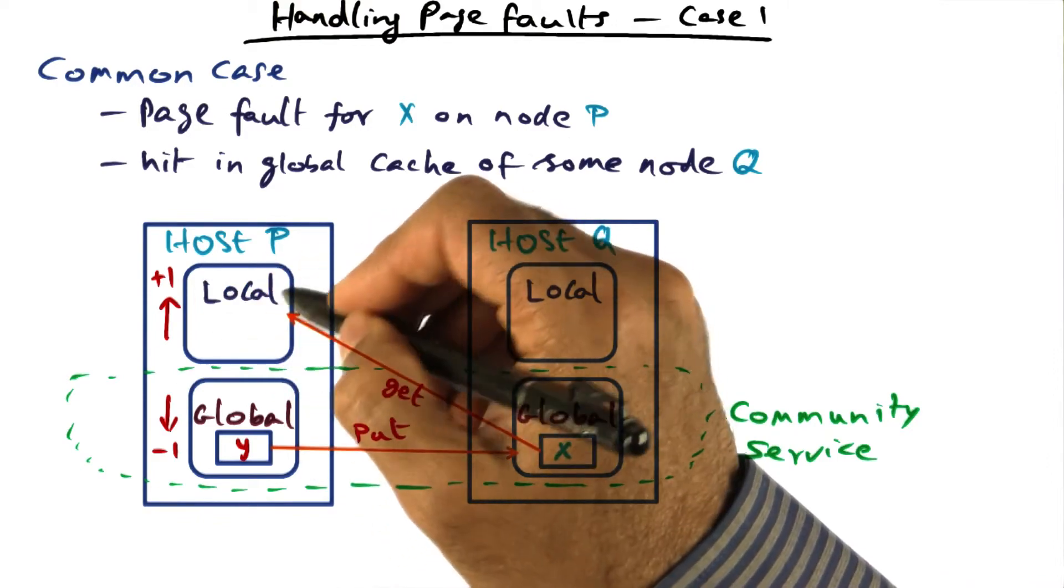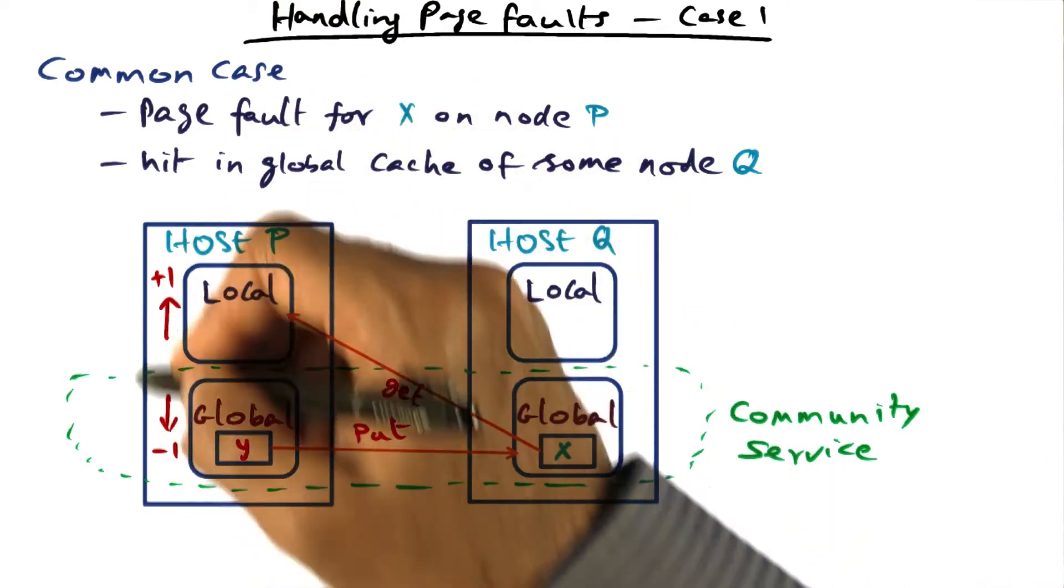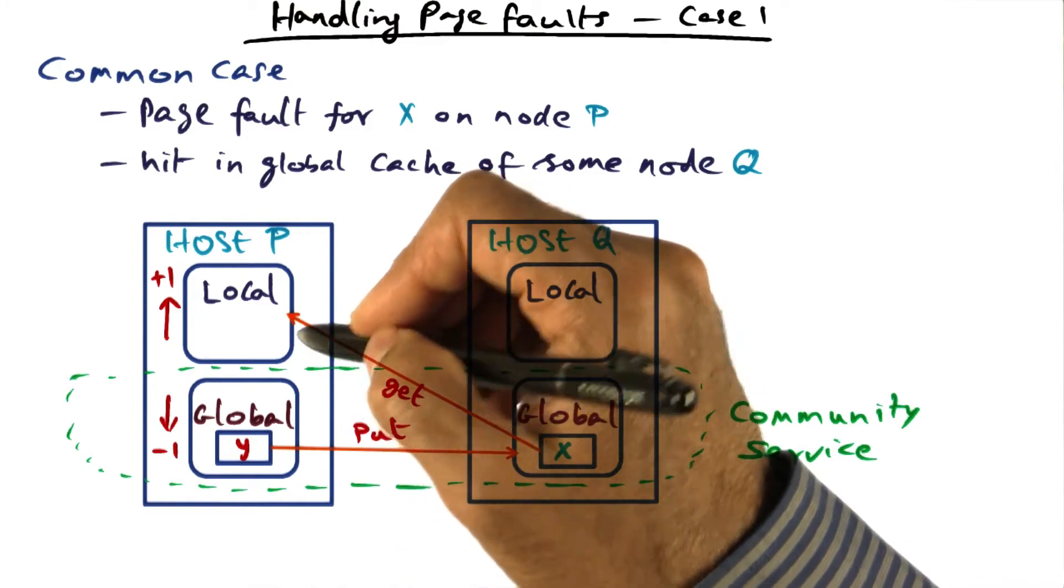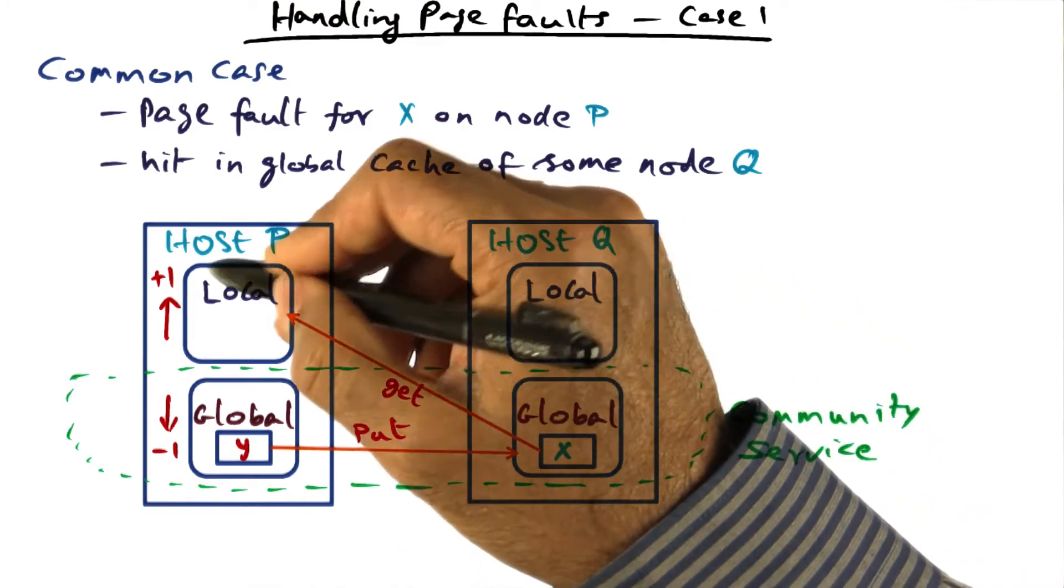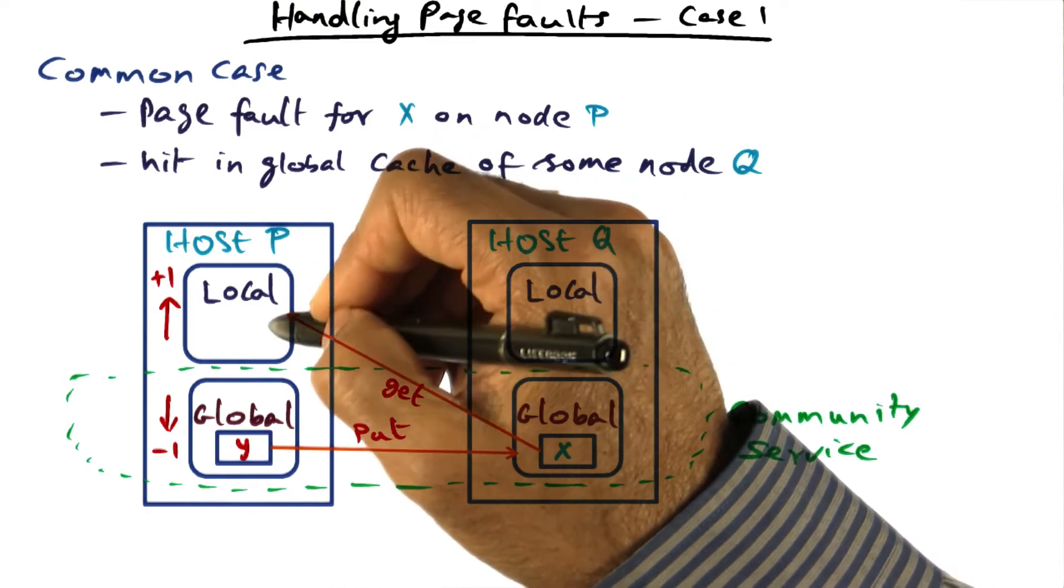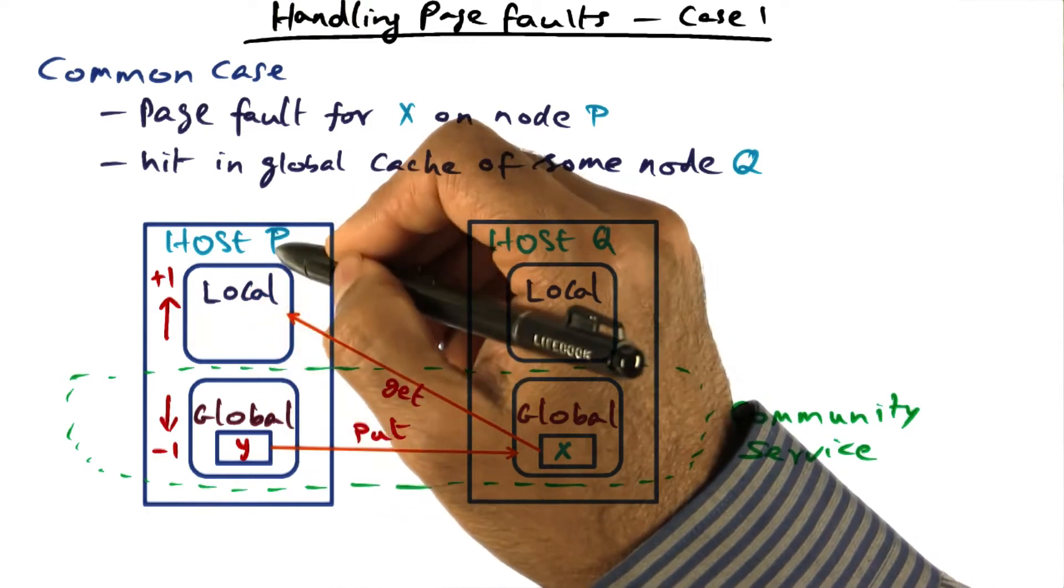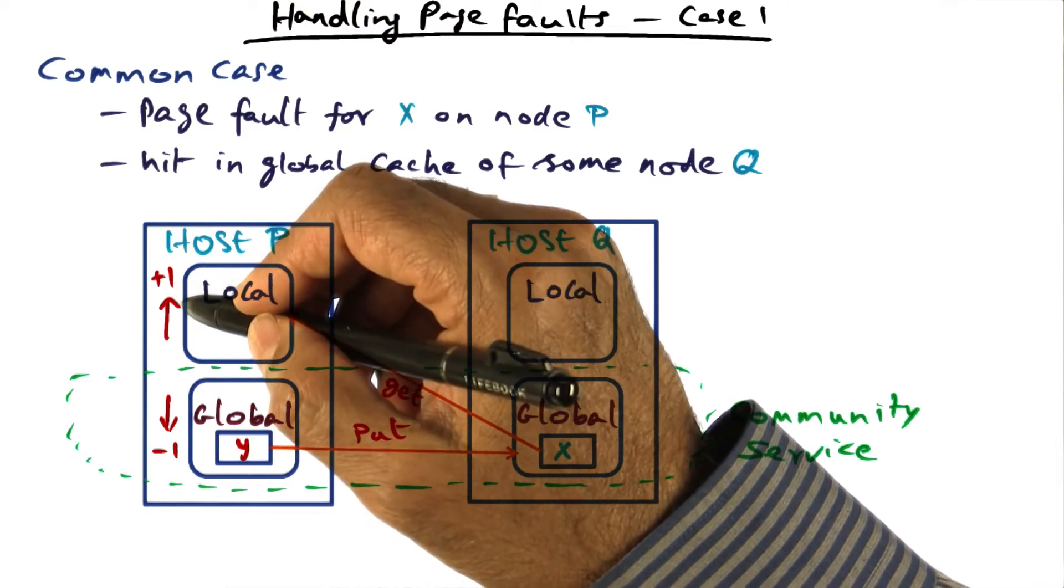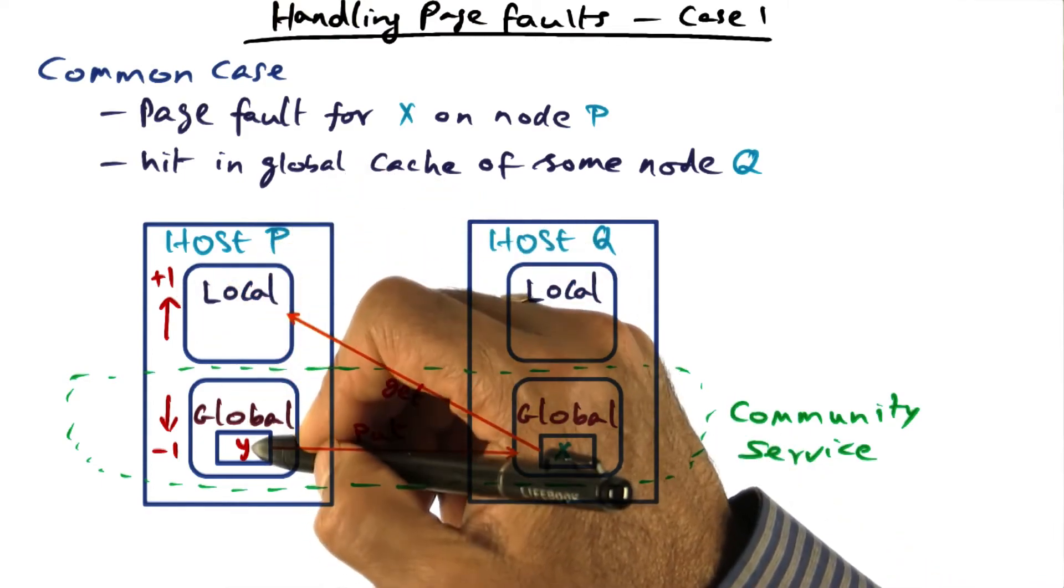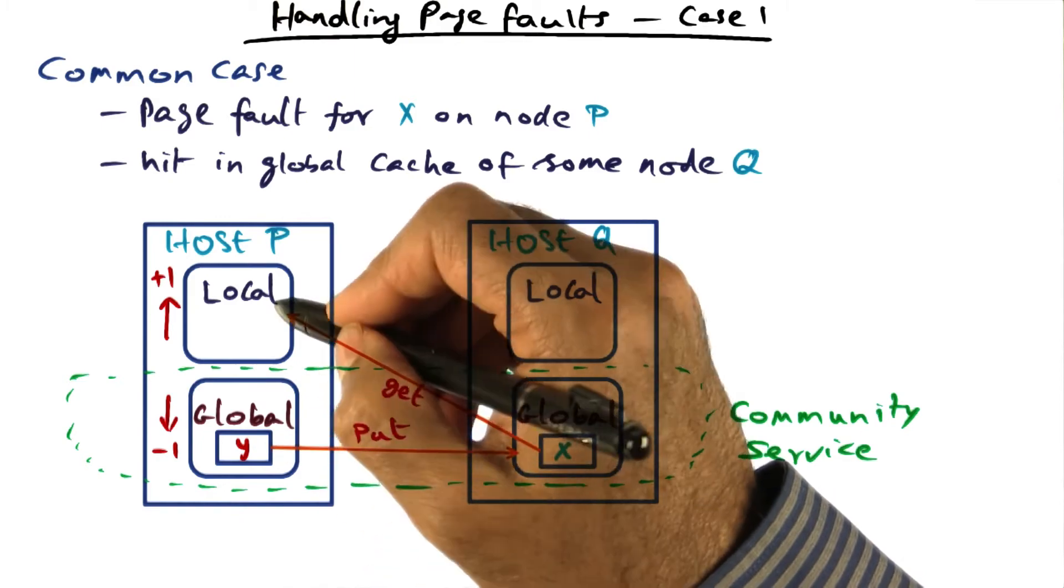And clearly, if there was a page fault, that means that the memory pressure on host P is increasing. And therefore, it is going to add X to its current working set. That is, its local allocation of the physical memory is going to go up by one.